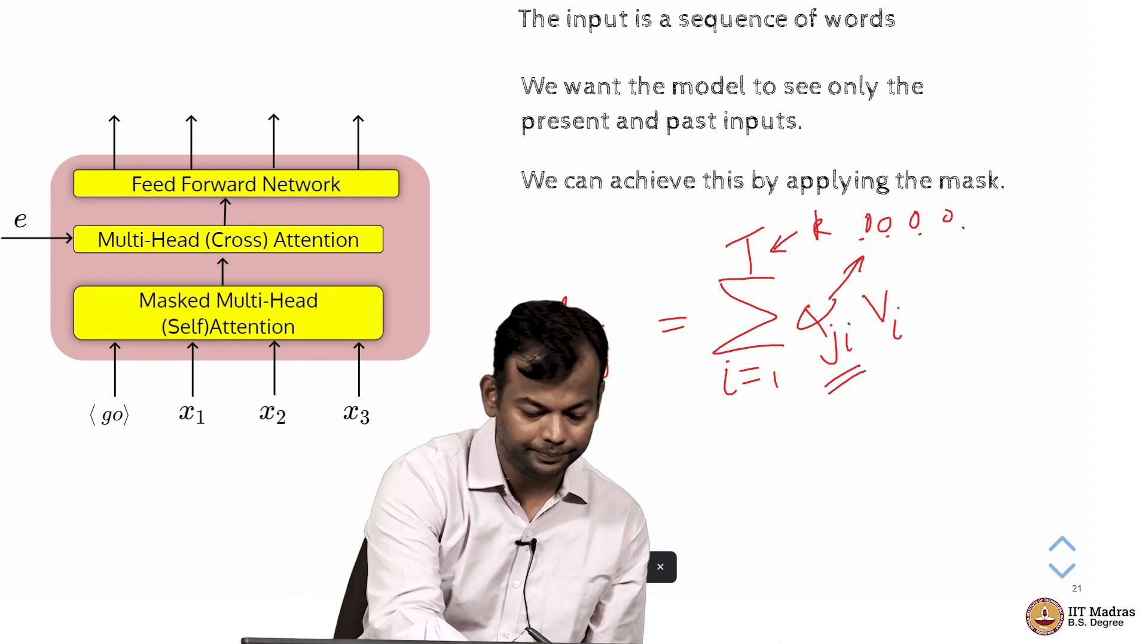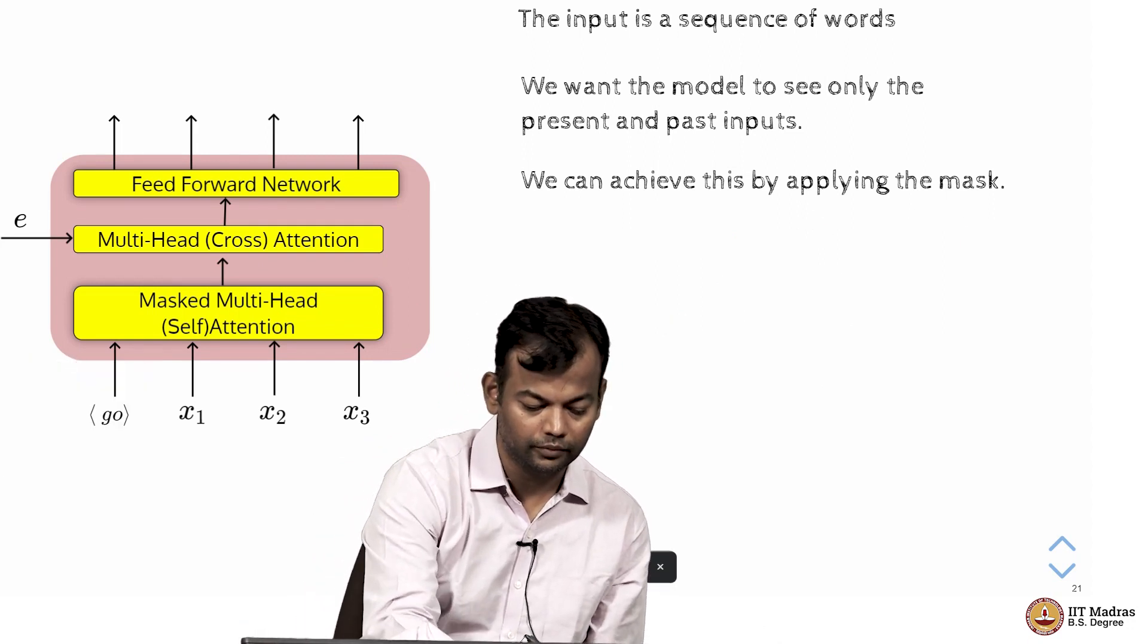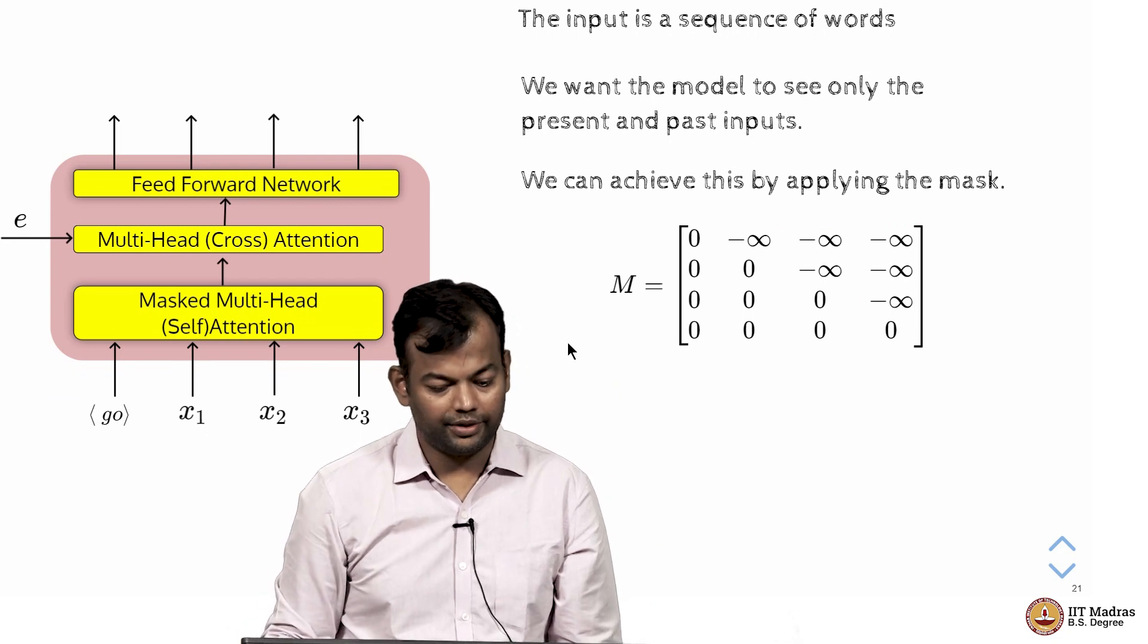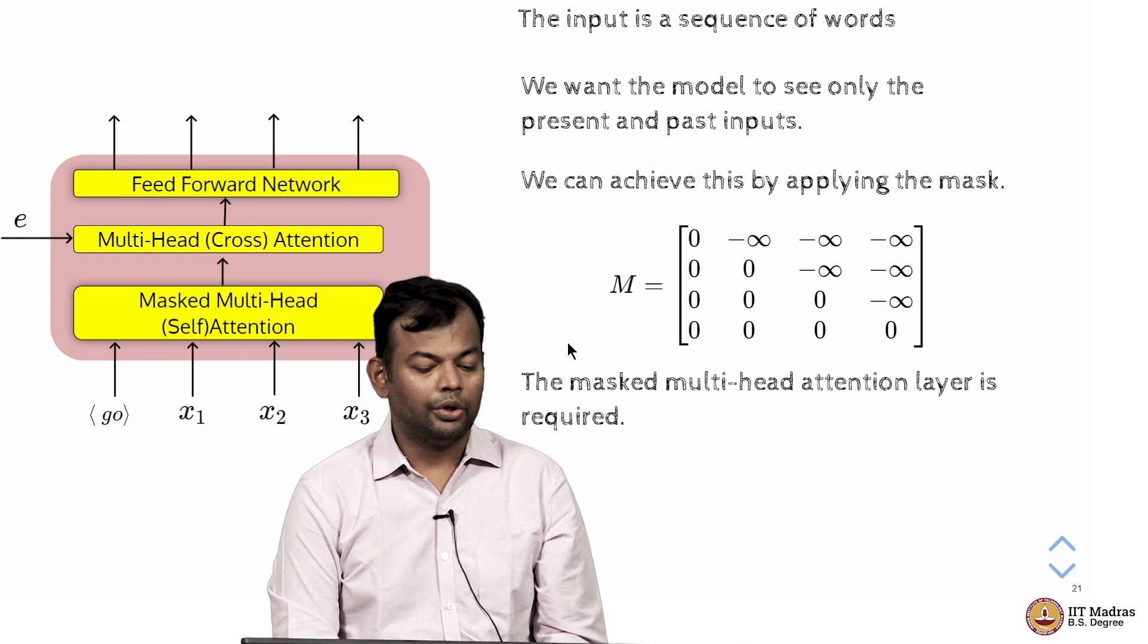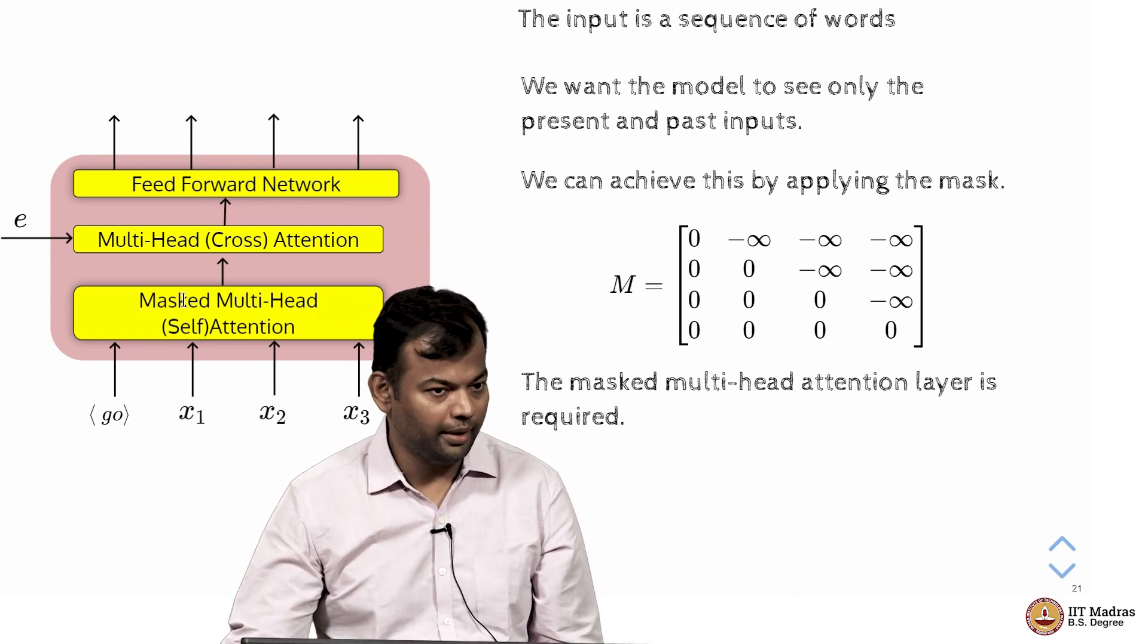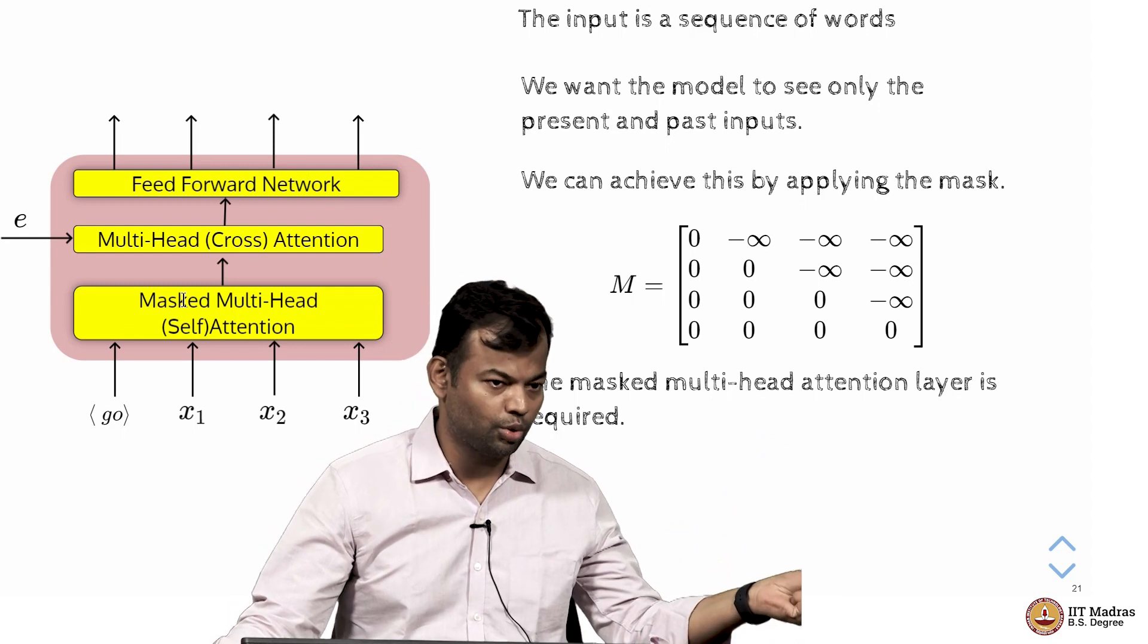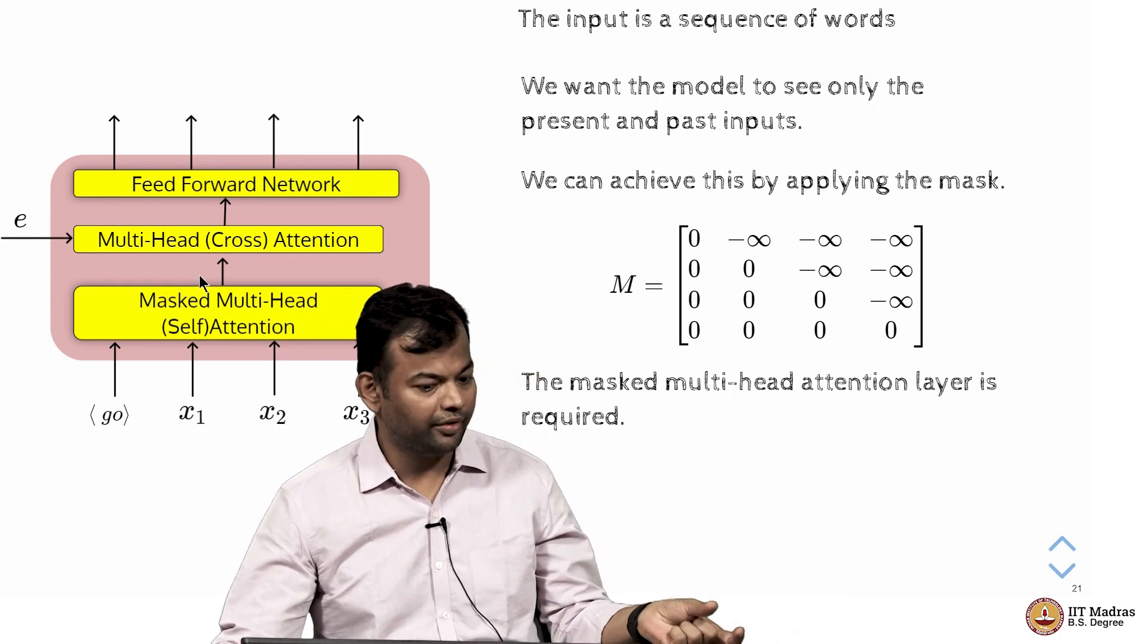Okay, so moving on. Yeah, this is the mask matrix that we had seen. So the masked multi-head self-attention layer is required, because you are going to attend to previous tokens in the decoder itself.